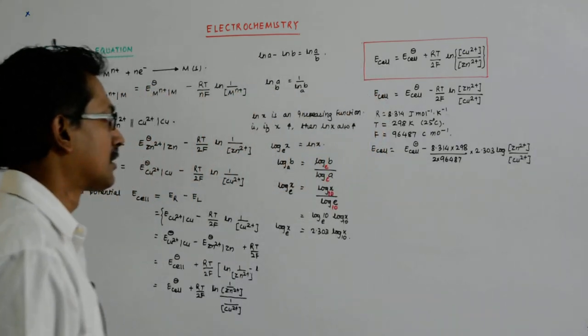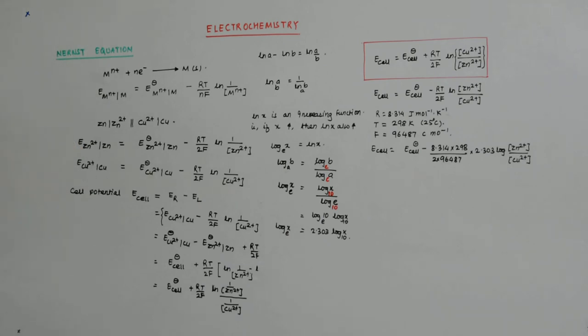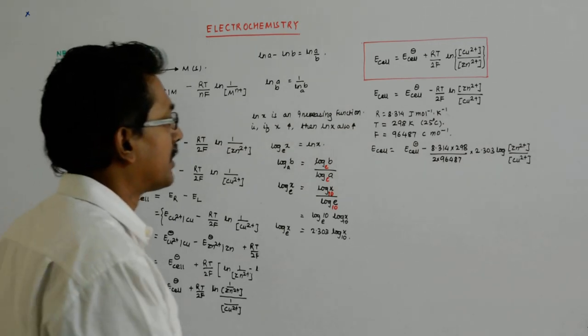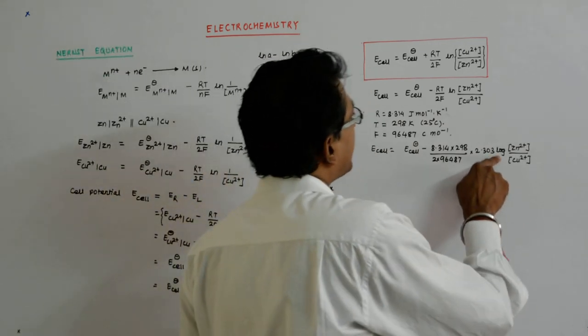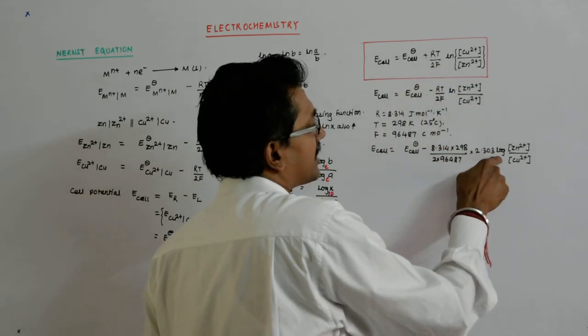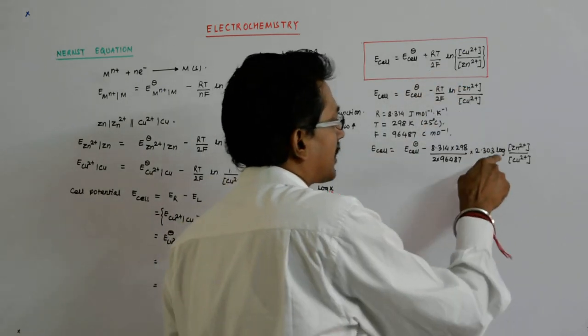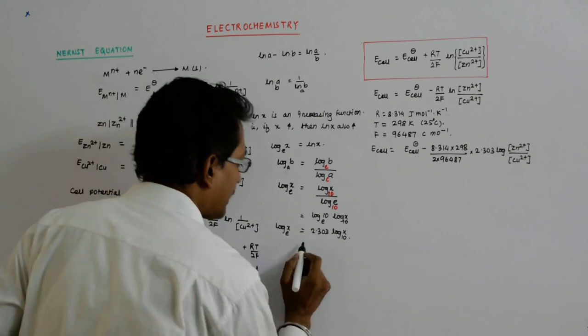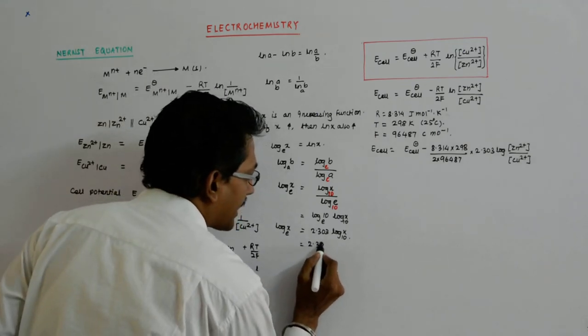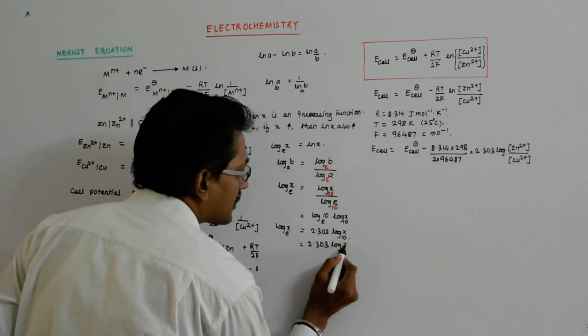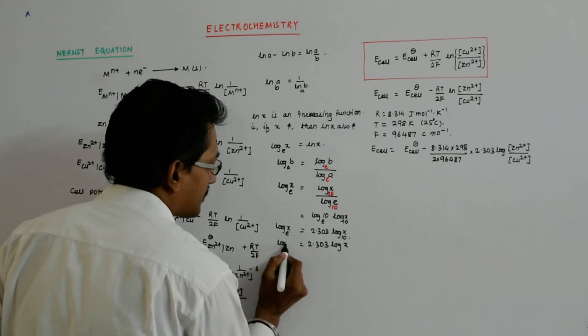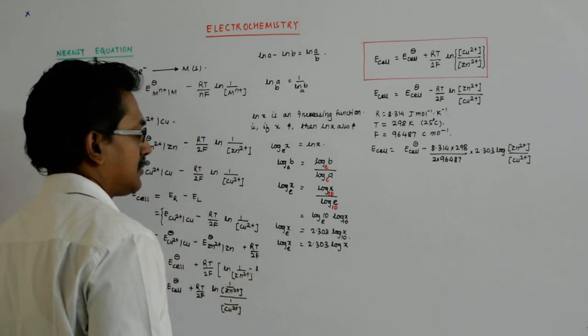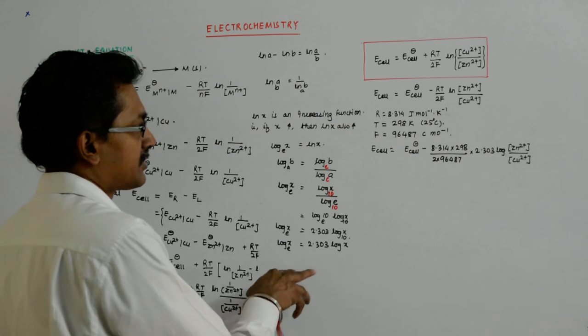So what we do is convert it. When I write log here, it automatically means the base is 10. No need to write that. This is a conversion that we should know.